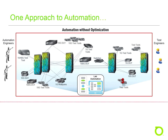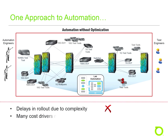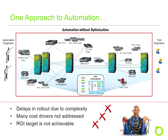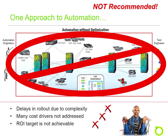Now that we've seen the drivers and key objectives for test lab automation, let's look at one approach for implementation. This diagram shows a scenario where a test lab was partially automated but not optimized. Complex infrastructure was kept in place and manual patch panels are still used for topology changes, while additional test tools are still required. Automating this level of complexity will likely result in serious project delays and many of the cost drivers still won't be addressed. In short, the return on investment target is not achievable in this scenario, and this approach is not recommended.